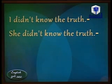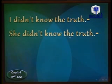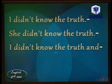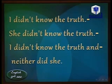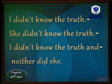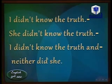Another example: 'I didn't know the truth' and 'She didn't know the truth' becomes 'I didn't know the truth and neither did she.' We write the first sentence as it is, add 'and neither,' then the auxiliary 'did' (from the original sentence), then the subject 'she.' Note: we never say 'neither didn't' — neither is always followed by an affirmative auxiliary.